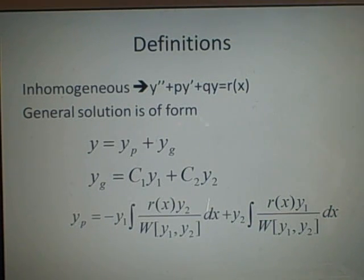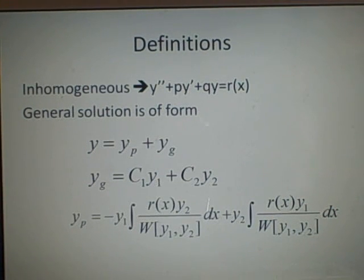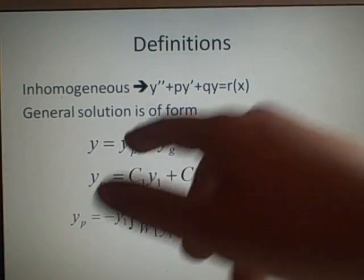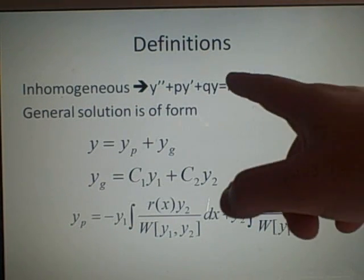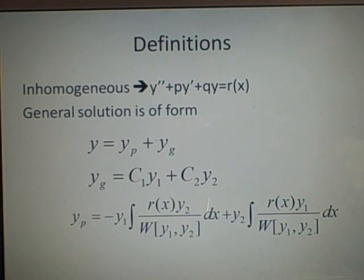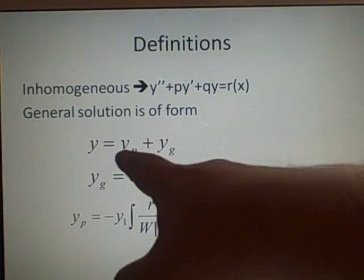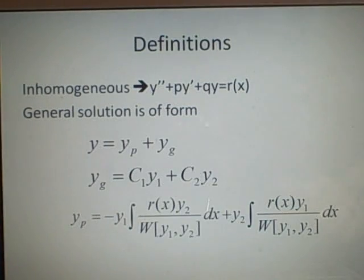The general solution when solving these is of the form y equals yp, which is our particular solution — solving it with r of x — plus yg, which is when we solve it homogeneously. When you're solving this homogeneously, you just let it equal to zero, forget about the r of x, and then you later solve it with the r of x in there for yp.